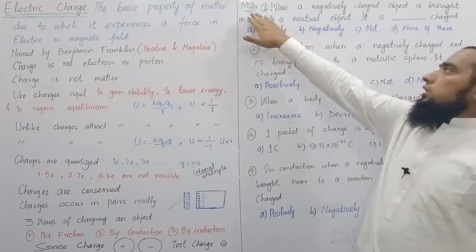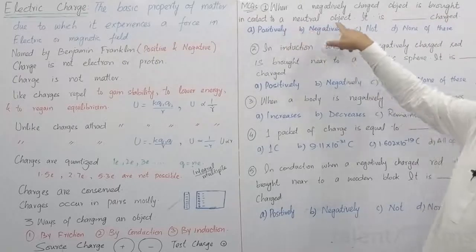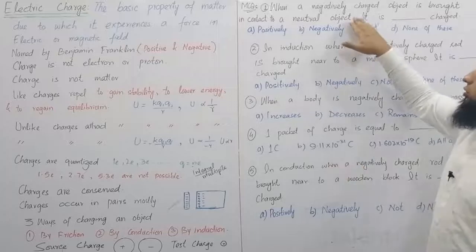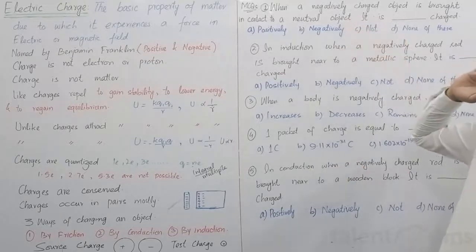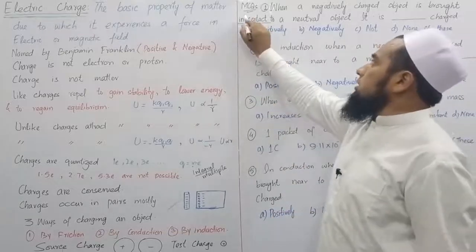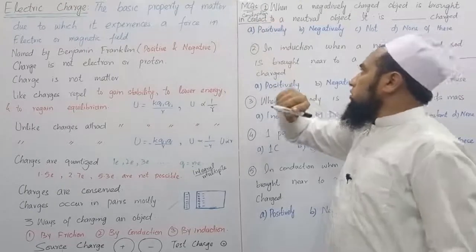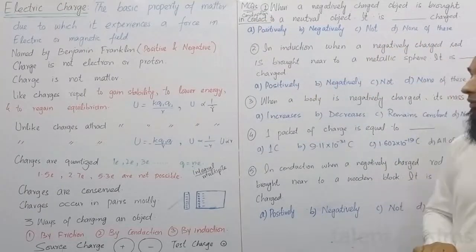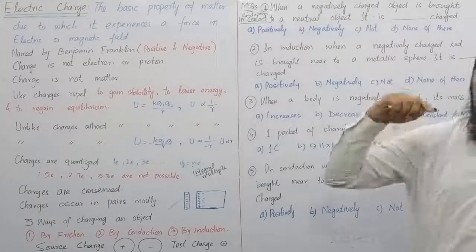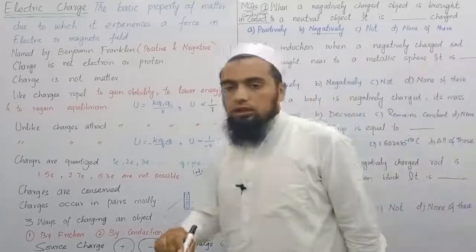Question: When a negatively charged object is brought in contact with a neutral object, what charge does the neutral object acquire? This is conduction. In conduction, the same charge that the charged object has will transfer — so the neutral object will become negatively charged.